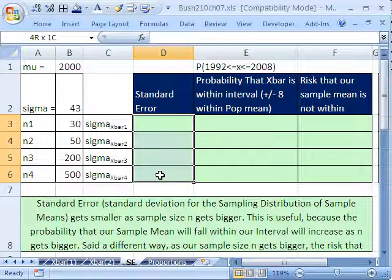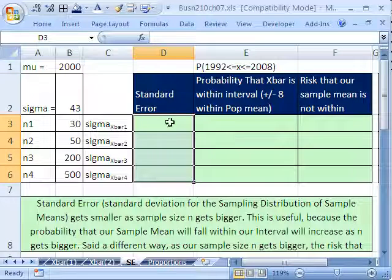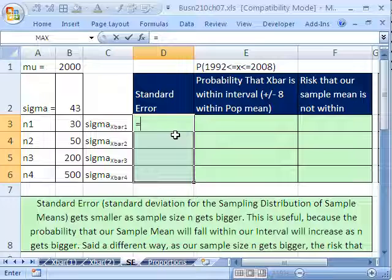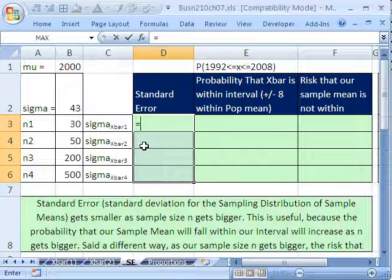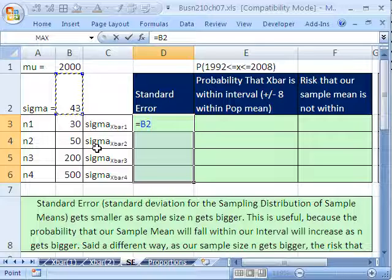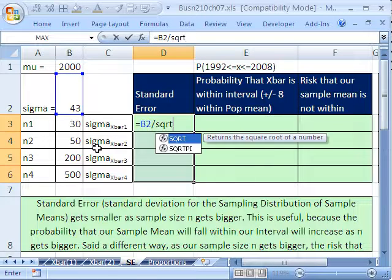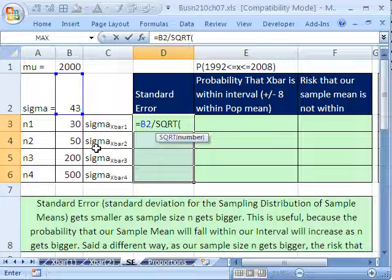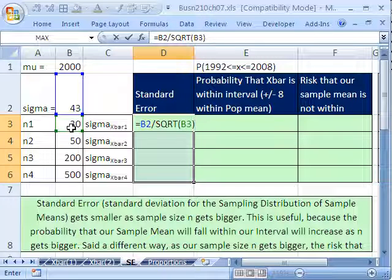I'm going to go ahead and highlight all four cells. And in this top light-colored cell, I'm going to say equals. And our calculation for standard error is population sigma standard deviation divided by square root of our n, close parentheses. Now I'm going to not Control-Enter because that one is a relative cell reference.